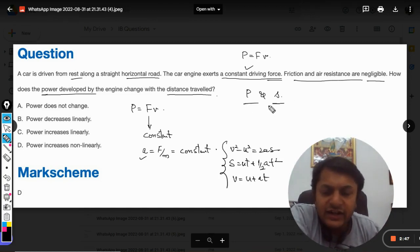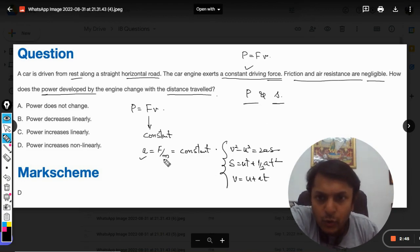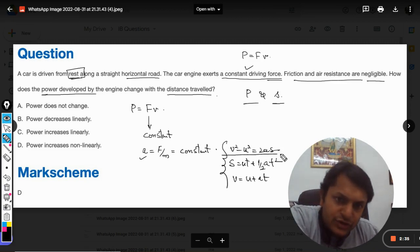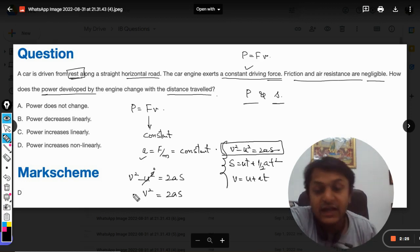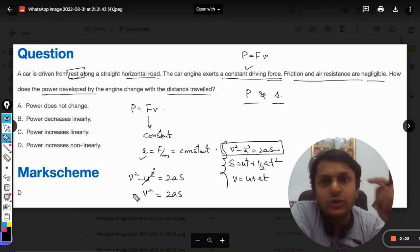We need to find the relationship here. The body is at rest, so I'm using this equation: v² - u² = 2as. Since u² is zero, v² = 2as, and acceleration is constant.